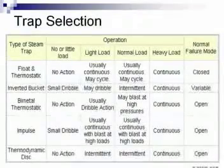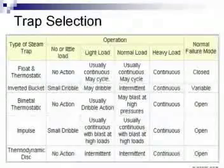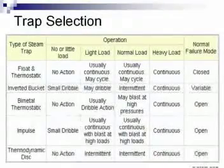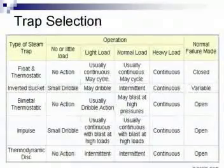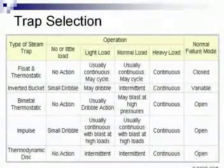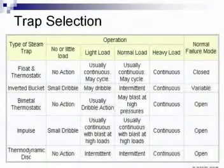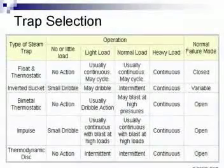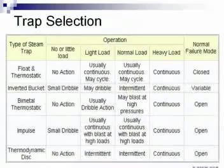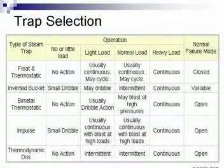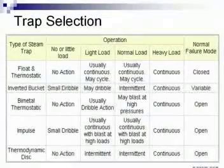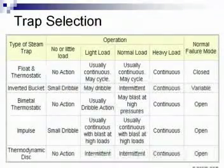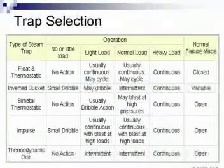Trap selection is imperative — the proper trap must be applied to the proper situation. If you notice to your left, there are five different styles of steam traps. In the center we discuss operation and typical failure modes. For example, looking at a floating thermostatic trap — when we talk about load, we're talking about the amount of condensate the trap is sized to remove. On light load it would usually cycle continuously; on normal load it would be usually continuous and may cycle; on heavy loads it would be continuous. Normal failure mode for a trap like that may be in a closed position. Inverted buckets, bimetallic, and impulse traps all have specific operating conditions that fit specifically in your system.